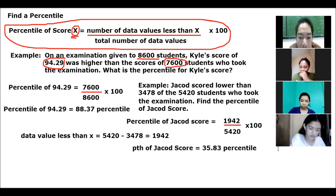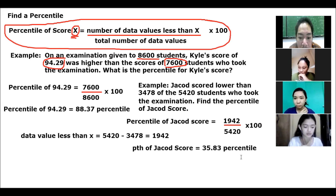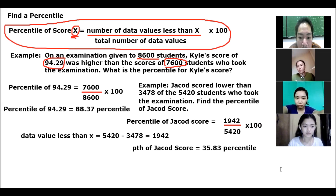Ano yung napapansin nyo dyan? Kung greater than o was higher, yun ang isasulat nyo na number of data values. Pero kung lower, isasubtract po natin doon sa total number of data values. Naintindihan na class? Yes sir.